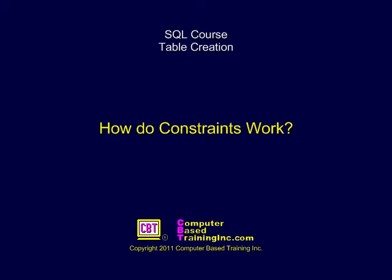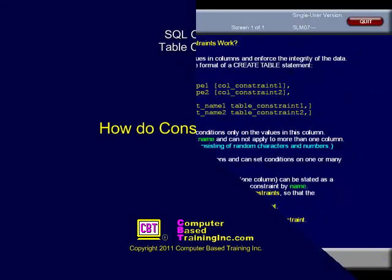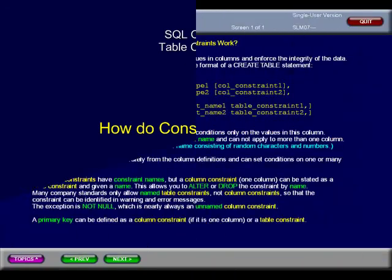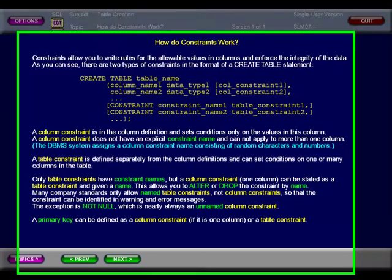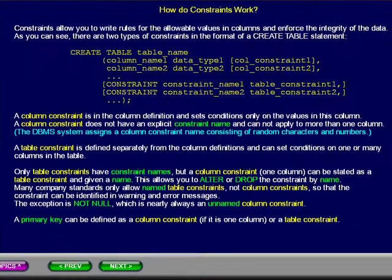How do constraints work? Constraints allow you to write rules for the allowable values in columns and enforce the integrity of the data.